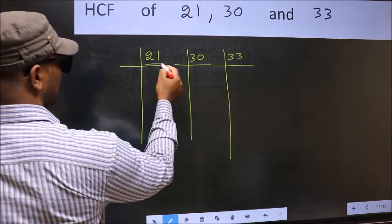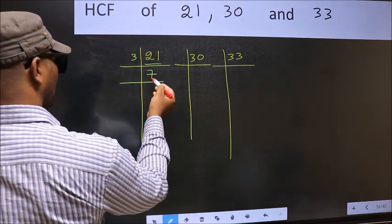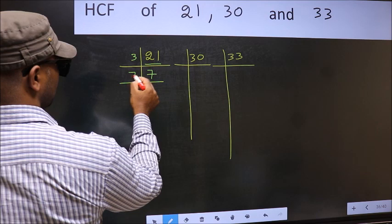Here we have 21. 21 is 3 times 7. Now 7 is a prime number, so 7 times 1 is 7.